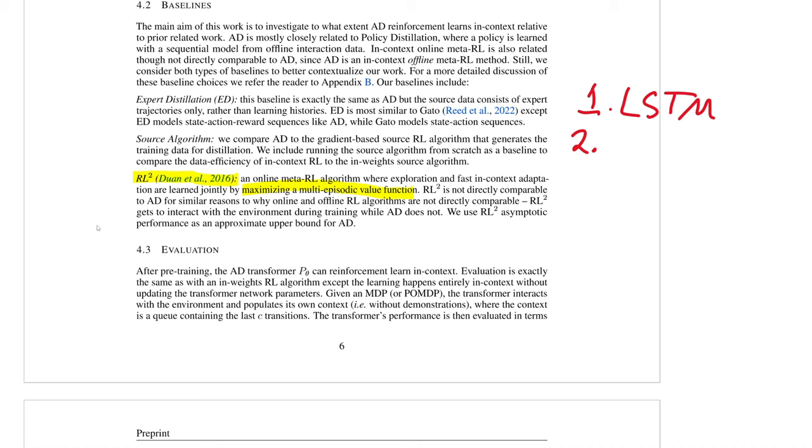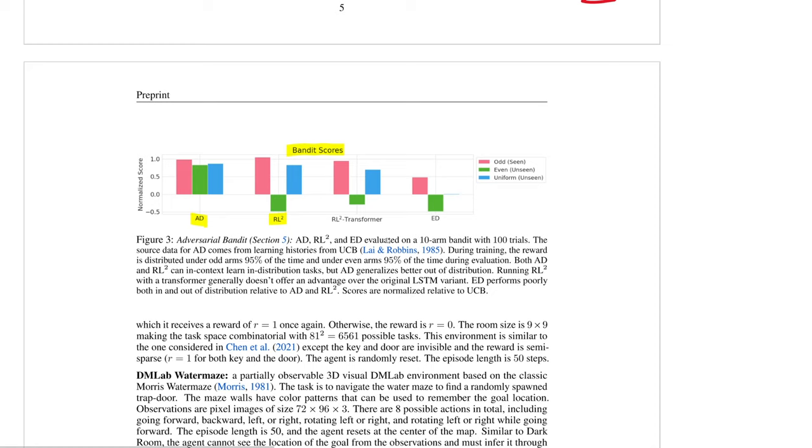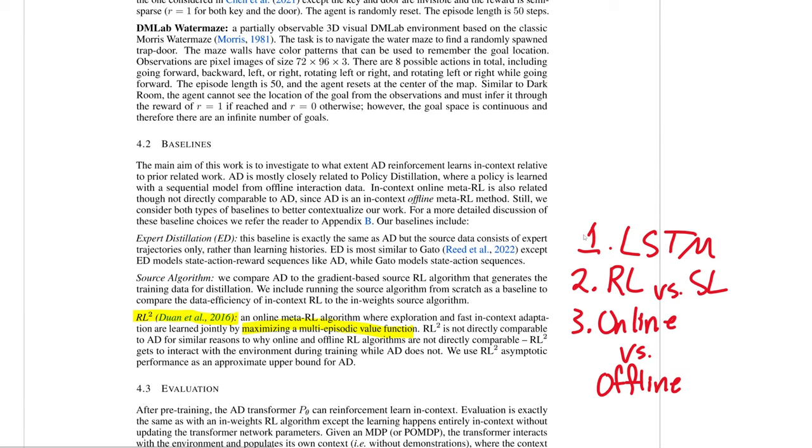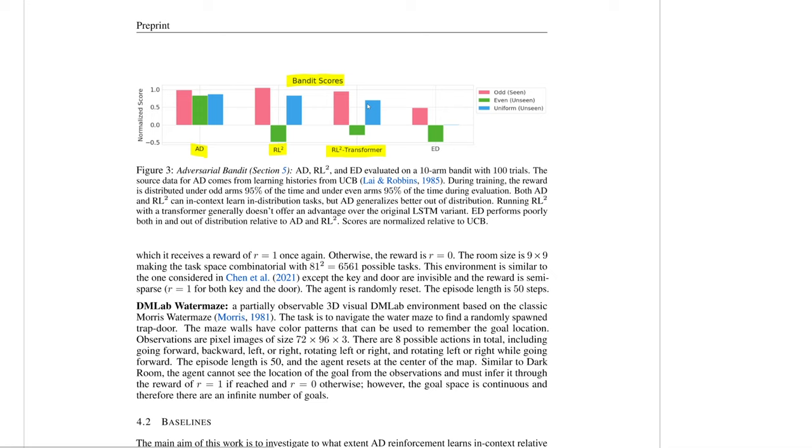RL squared is probably the most important because it is the most similar to AD in the aspect that it looks over multiple episodes. However, the key differences here are threefold. The first thing is that RL squared uses an LSTM instead of a transformer. The second difference is that RL squared uses a reinforcement learning objective to maximize multi-episodic reward as opposed to AD, which is just using supervised learning to imitate actions provided by a predefined RL policy. So in summary, RL squared is actually reinforcement learning, whereas AD is just supervised learning over reinforcement learning.